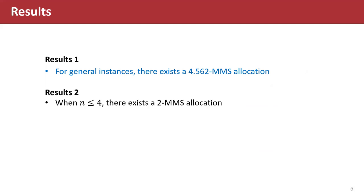Our paper has three results. The first result is that for general instances, there exists a 4.562-MMS allocation. The second result is that when n ≤ 4, there exists a 2-MMS allocation. And the third result is that no better than 2-MMS allocation is guaranteed for any n. And that's all, thank you.